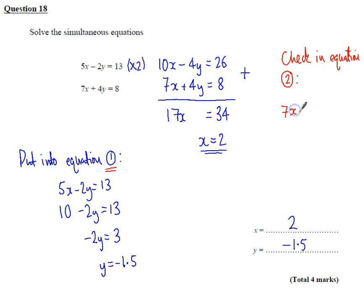So equation 2 says 7x plus 4y equals 8. We're saying x is worth 2, so 7 times 2 is 14. 4 times minus 1.5 is minus 6. And that does indeed equal 8. So that is true. Now if I've got a calculation here where I didn't get the number from the first equation, I know that one or both of these are wrong. So it's really worth checking.